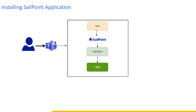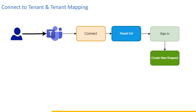After installing the SailPoint app, we can see how to connect to a tenant or do tenant mapping. Let us see about tenant mapping. If the user is connecting for the first time, the user has to connect to a tenant. For that we have tenant mapping — we need to paste the tenant URL in the tenant mapping field.